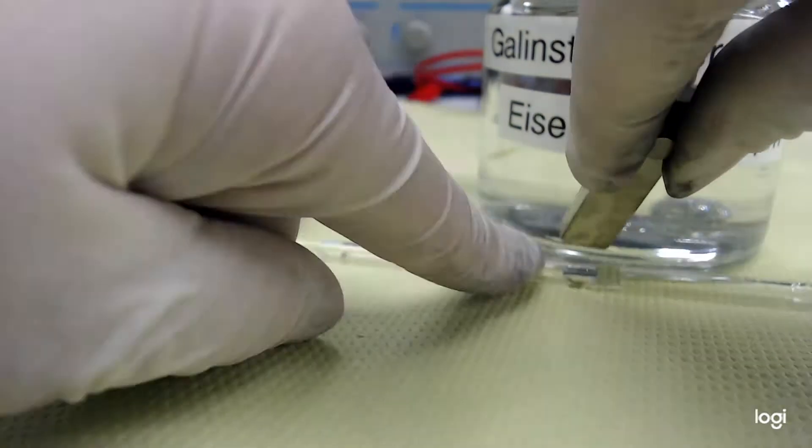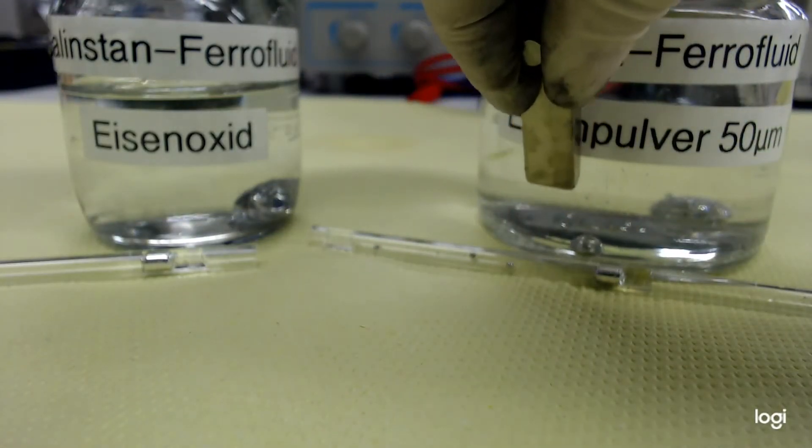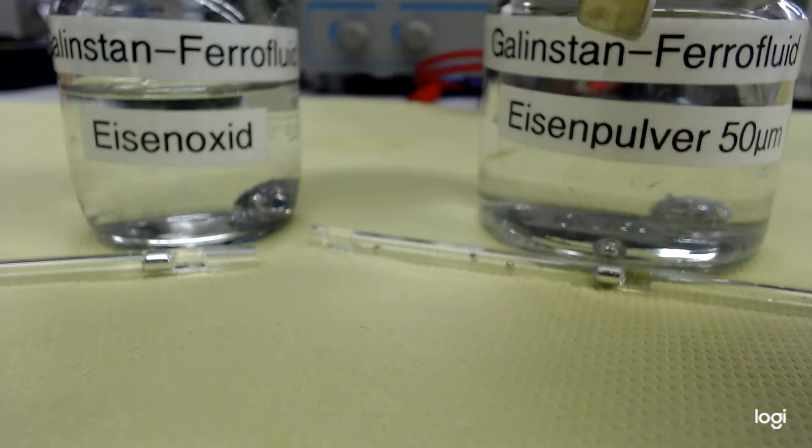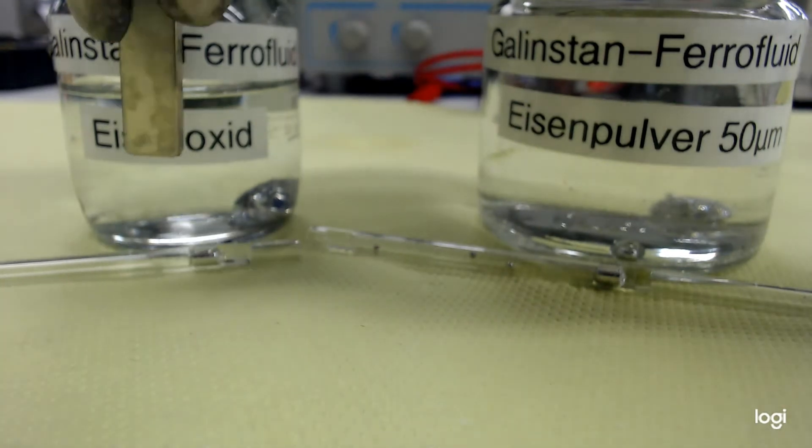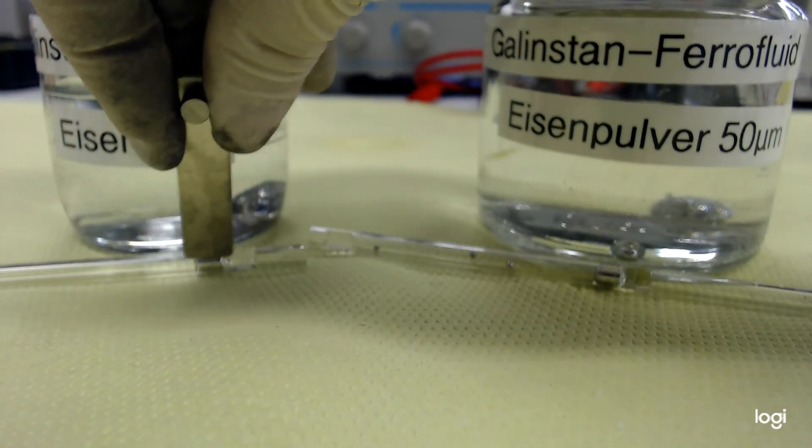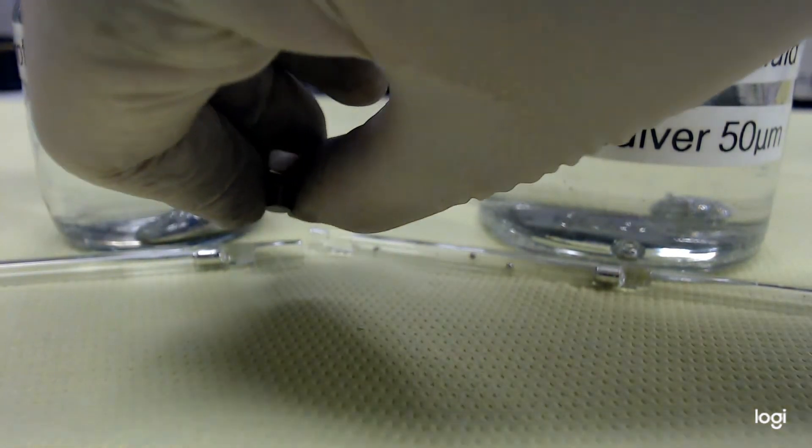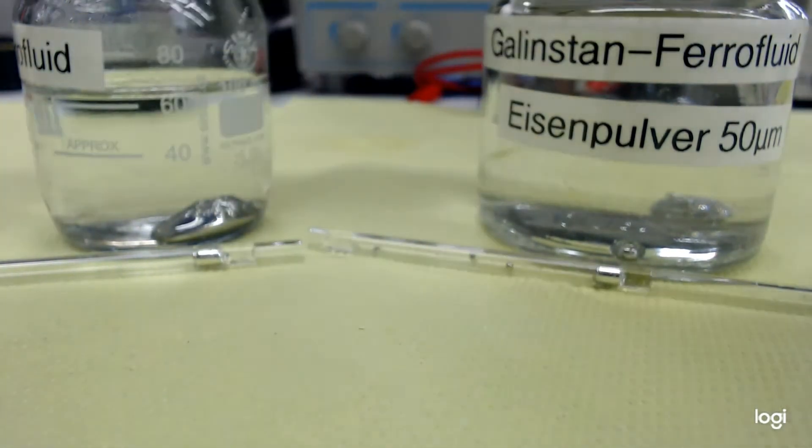Here, the iron powder has formed an alloy with the Galinstan and it can transfer magnetic properties to the full liquid metal. So in the case of the iron oxide powder, it has probably been completely washed out of the Galinstan and is no longer contained in the liquid metal.